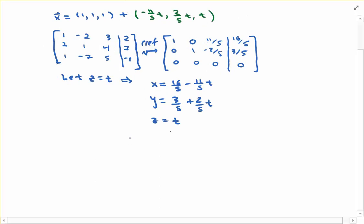As an ordered triple, the general solution of the non-homogeneous linear system is vector x. Converting this to an ordered triple, we have 16 fifths minus 11 fifths t as the first component, 3 fifths plus 2 fifths t as the second component, and t as the third.